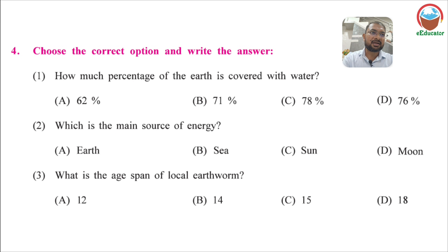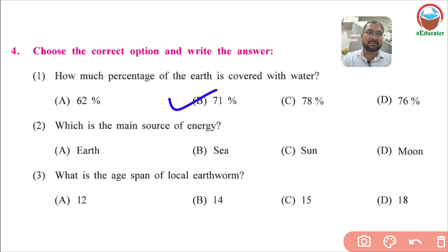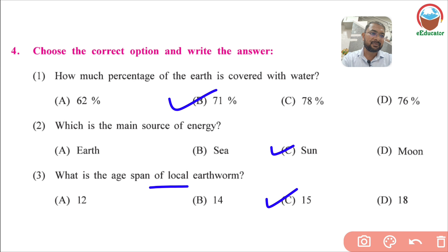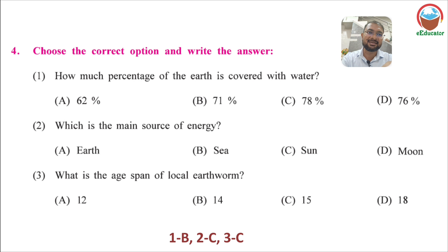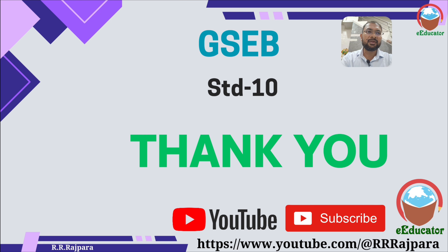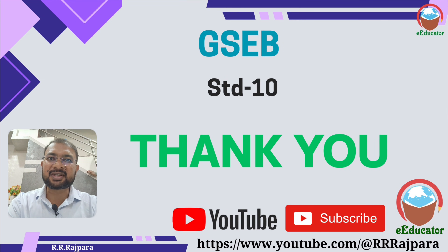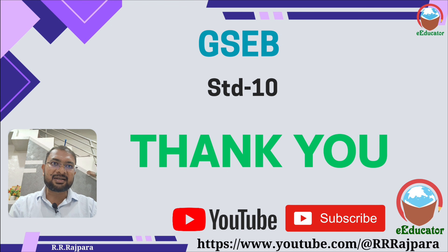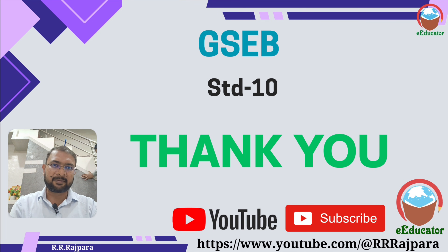MCQ answers: How much of Earth is covered with water? — 71 percent (B). What is the main source of energy? — Sun (C). What is the lifespan of a local earthworm? — 15 years (C). Hope you like this video. Please subscribe to the channel. All chapters and all standards have videos uploaded, and all links are available in the video description box. Thank you.